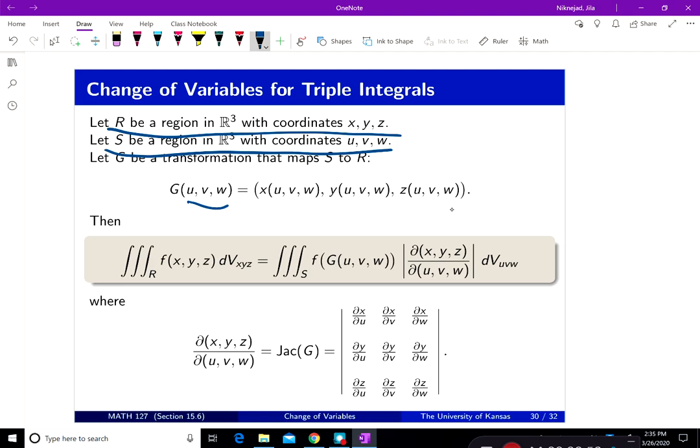Then the triple integral when the volume element is with respect to xyz is going to be converted or change variable to... R is going to change to the triple integral over region S, which is the pre-image, and the volume elements with respect to u, v, w.